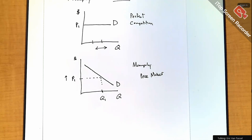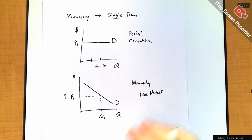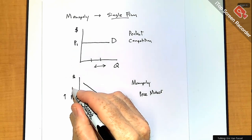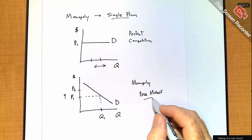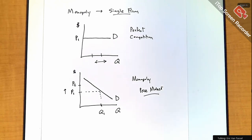There's always a trade-off. Even though there's no competition, there are still constraints — a key constraint is that you always face a downward-sloping demand curve. If you want to raise the price to P2, you're going to have to give something up: there's a quantity effect where you sell fewer units, though you can sell them at a higher price. So this is the price maker, as opposed to the price taker.